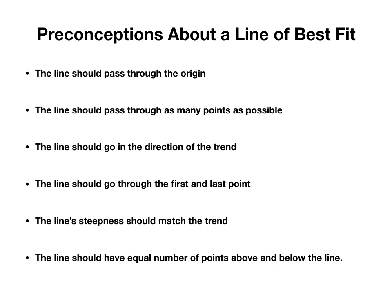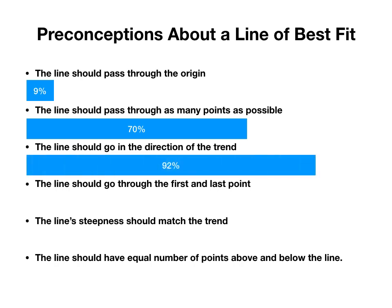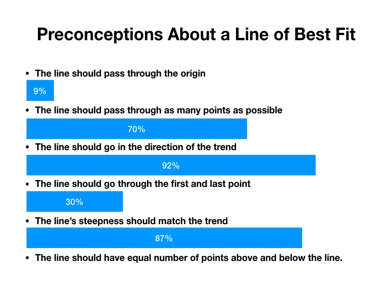The first point: the line should pass through the origin — about 9% of you thought that was important. The line should pass through as many points as possible — 70% of you thought that. The line should go in the direction of the trend — 92% of you thought that was important. The line should go through the first and last point — about 30%. The line steepness should match the trend — 87%. And the line should have equal number of points above and below the line — about 30%.